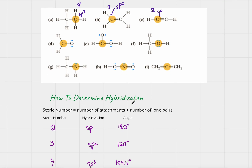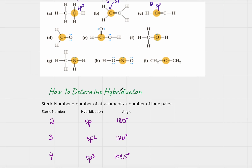For part d, how many attachments does this carbon have? One, two, three. It does not have any lone pairs, so steric number is three and hybridization is sp2.